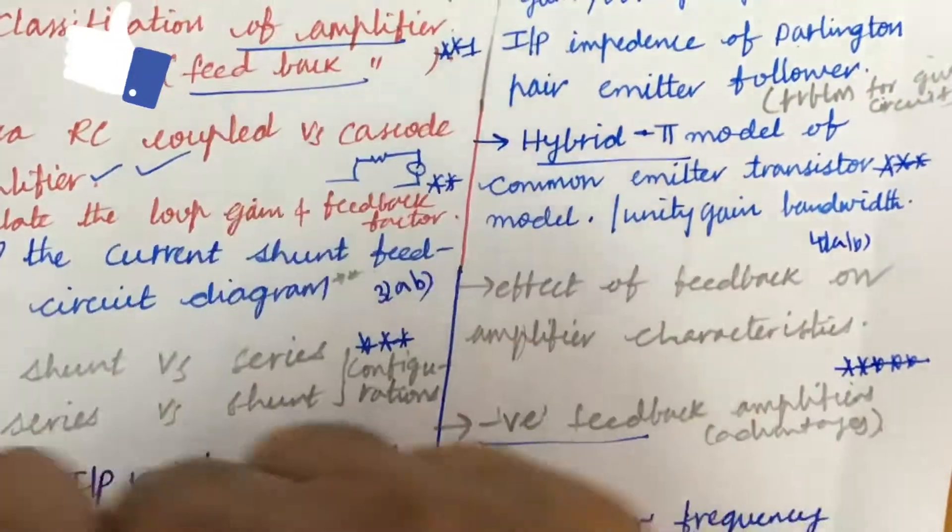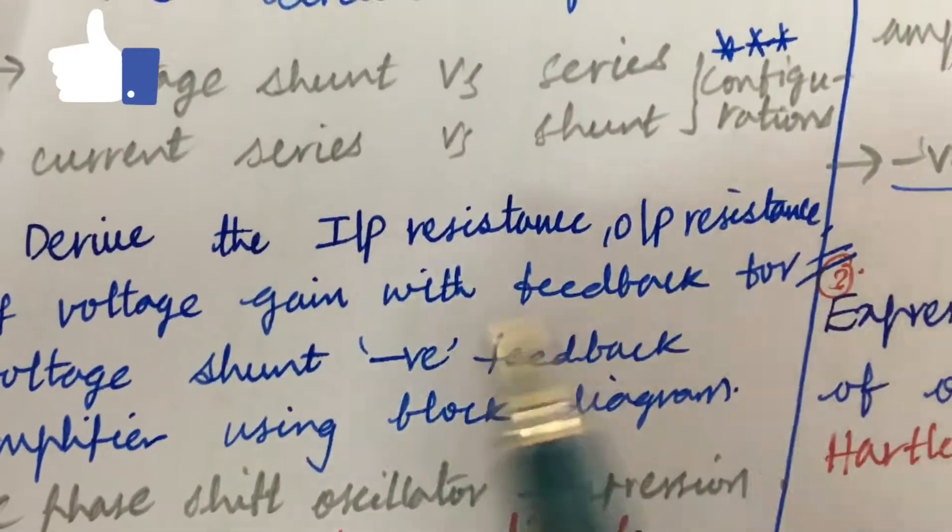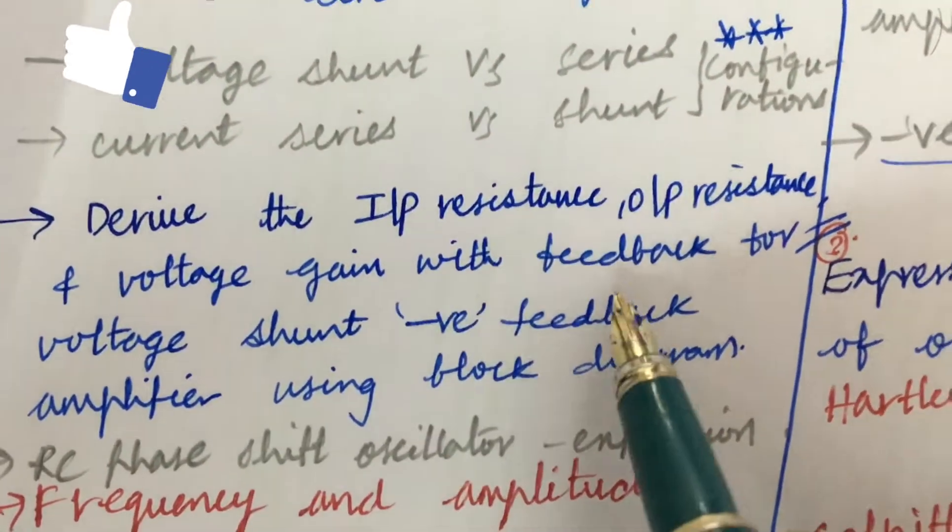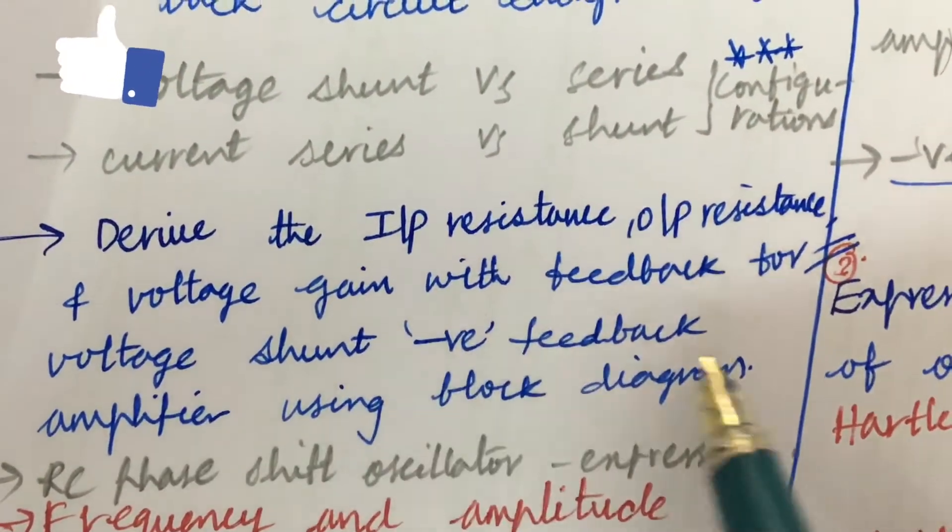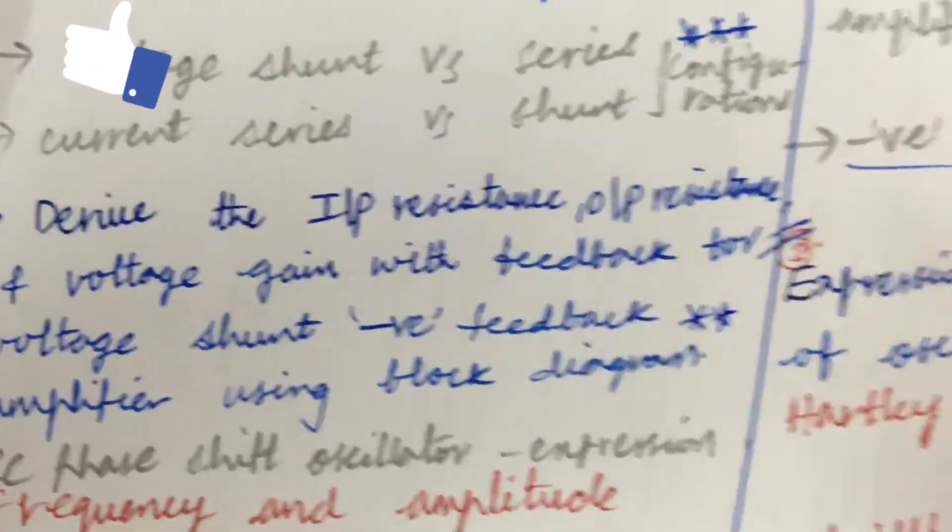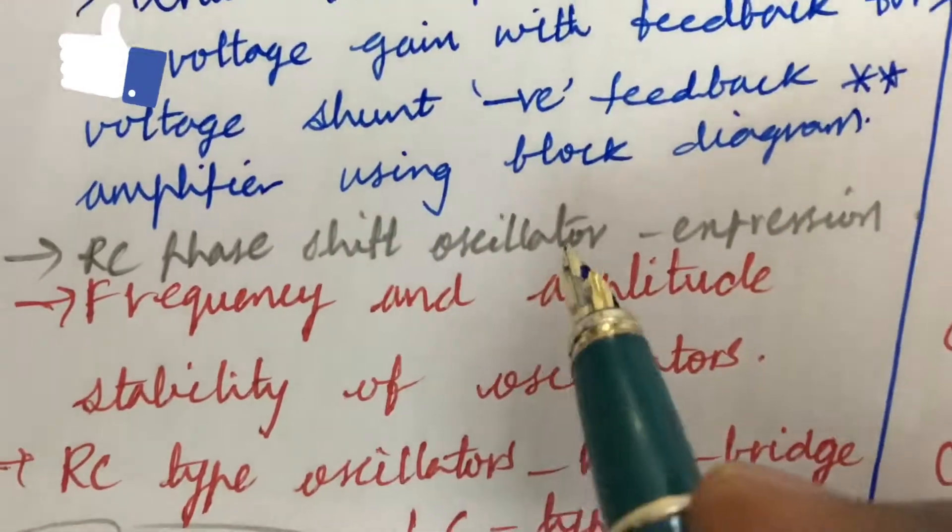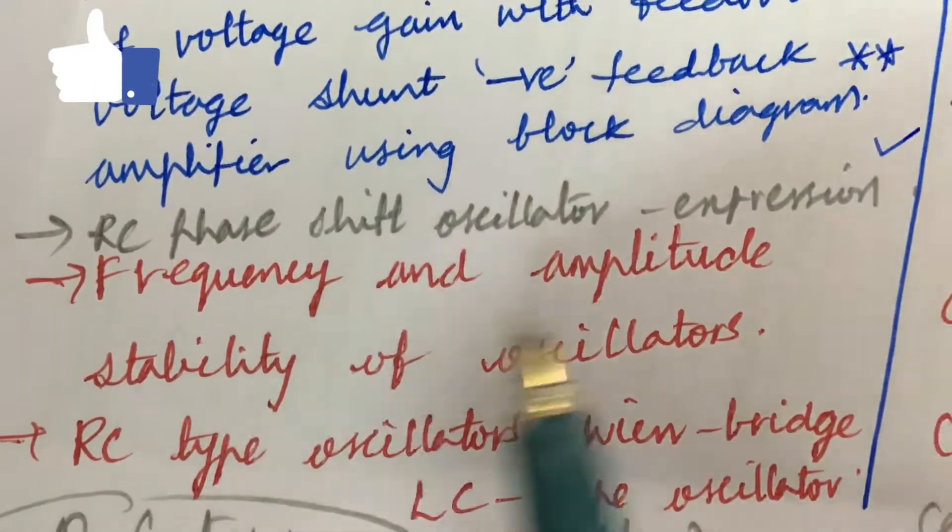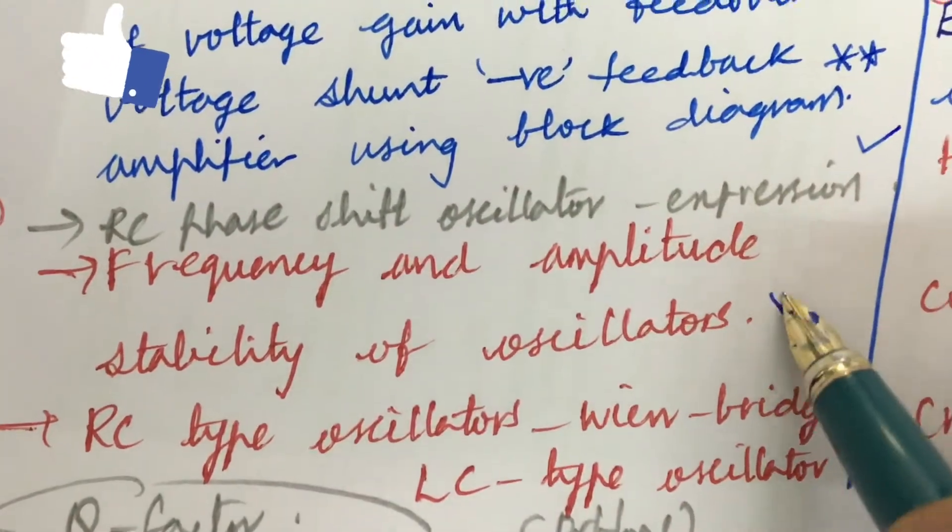Derive the input resistance and output resistance and voltage gain with feedback for voltage shunt negative feedback amplifier using block diagram. This is also one of the very important questions. Later, RC phase shift oscillator expression and frequency, and amplitude stability of oscillators is all said to be very very important and gunshot question which we can expect in the sixth equation.